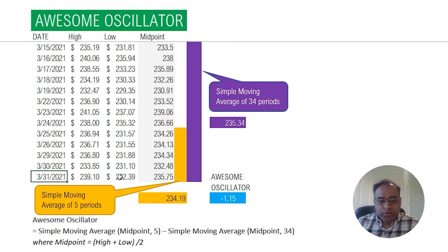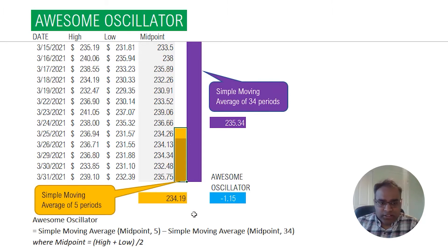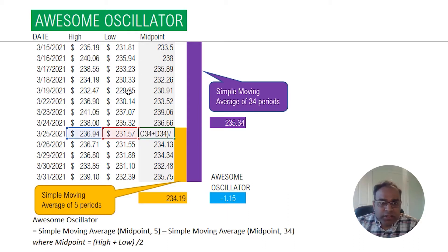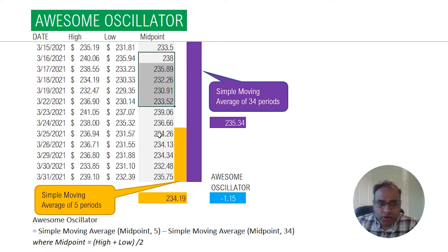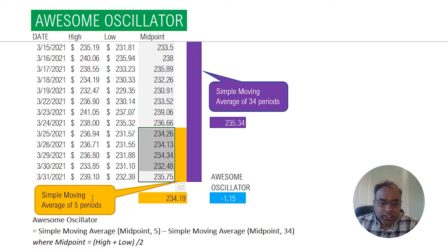We are using two simple moving averages. The orange indicates the simple moving average for five periods. And what are we calculating the simple moving average for? We are calculating it on the midpoint. A midpoint takes the highest price point for the day and the lowest and finds the midpoint — basically the middle between the high and the low. So we first calculate the midpoint for all of the days and then we calculate the simple moving average of the midpoint for five periods. That's our first simple moving average.